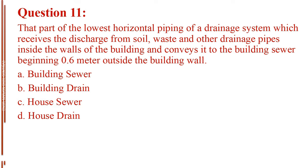Question number 11. That part of the lowest horizontal piping of a drainage system which receives the discharge from soil, waste and other drainage pipes inside the walls of the building and conveys it to the building sewer beginning 0.6 meter outside the building wall. Letter A, building sewer. Letter B, building drain. Letter C, house sewer. Letter D, house drain.